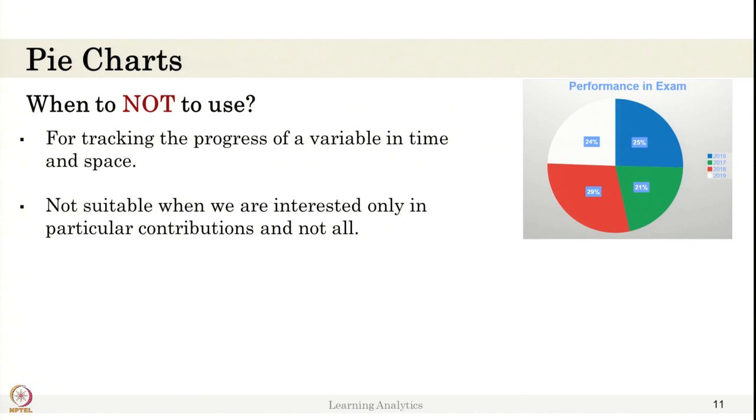When not to use pie charts, we saw the example that last 6 years score, consider the average score is represented in the pie chart. Such a place is like when you are comparing the progress over time, do not use pie charts. And also similar to bar chart, if you are interested on one particular type of data, one particular user's information, one user's contribution, pie chart may not help.